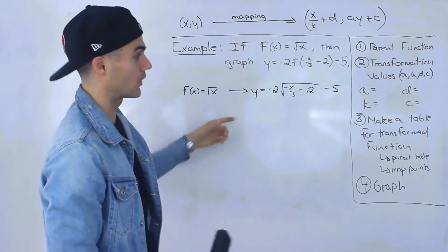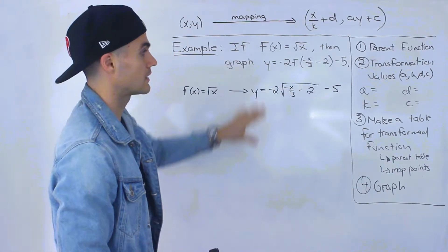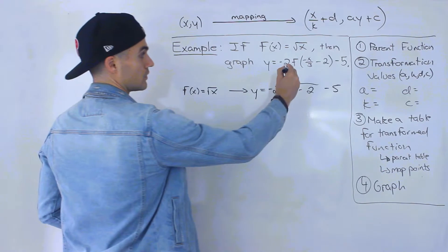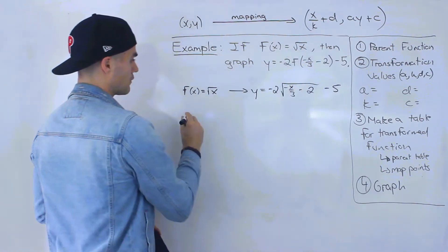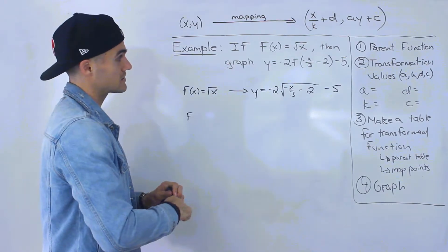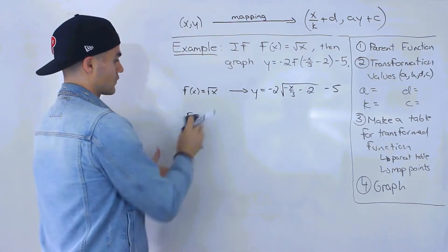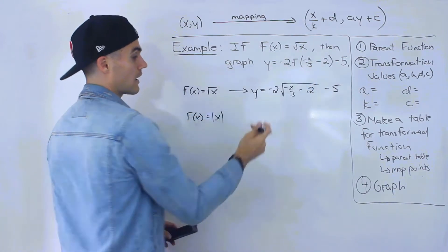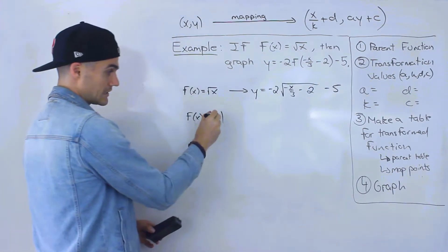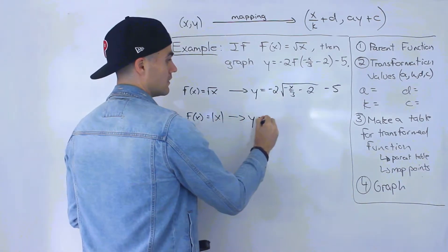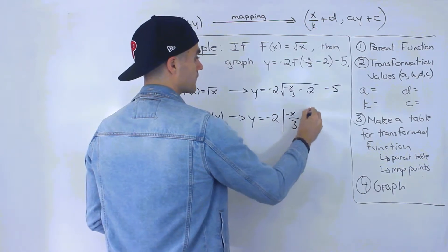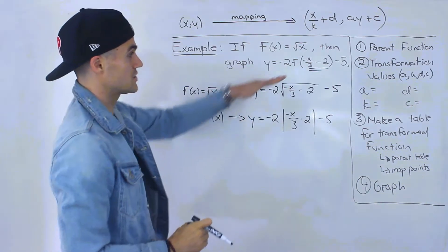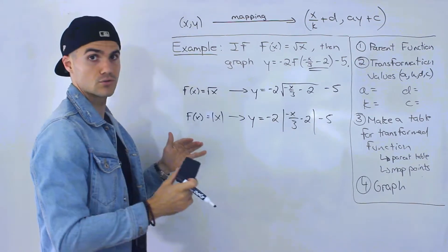In this case, we'd have to figure out what the parent function is — it'd be the square root of x — and then follow these steps: get the transformation values, do the mapping, etc. In the general format, that parent function could have been anything. It was given as the square root of x, but it could also have been, for example, the absolute value of x, and then we'd apply those transformations to that parent function.